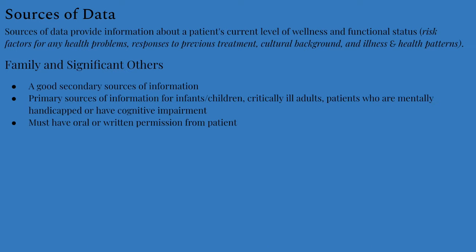Family members and significant others are secondary sources of information, but they are primary sources for infants, children, critically ill adults, patients who are mentally handicapped, or have cognitive impairment. Family members help confirm patterns — such as whether a patient takes their medication, when changes in health were first noticed, or how well the patient sleeps at home. In certain cases, family members may be the only source of information. Always obtain written or oral permission from the patient before consulting their family, as some patients don't want family involved.